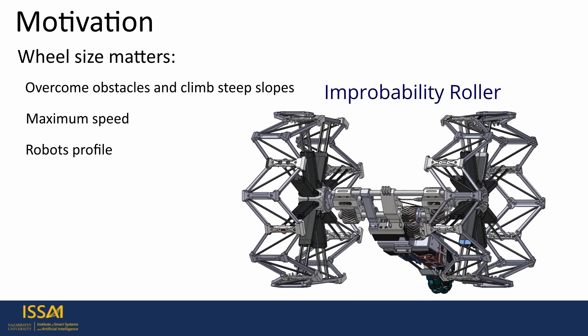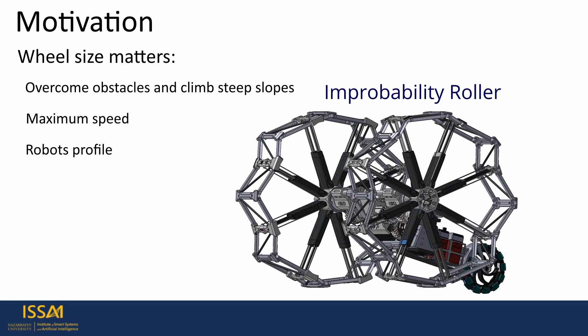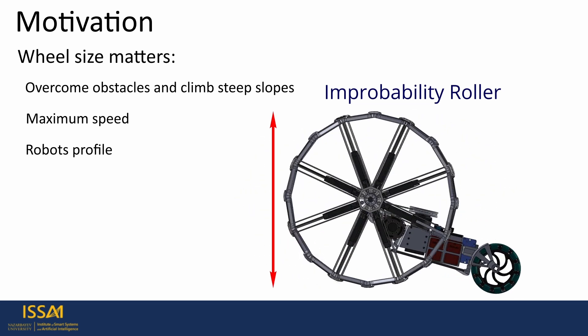A variable diameter, two-wheeled mobile robot which has the ability to continually change its wheel diameter from 225 to 355 mm and is also equipped with a caster wheel for stability purposes.